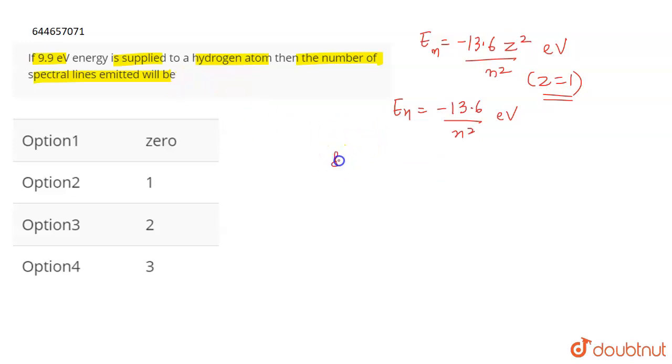Now, if we supply 9.9 electron volt of energy, what will be the energy? It will be the energy in the ground state. The energy of hydrogen in the ground state is minus 13.6 over one squared electron volt, which is just minus 13.6 electron volt.